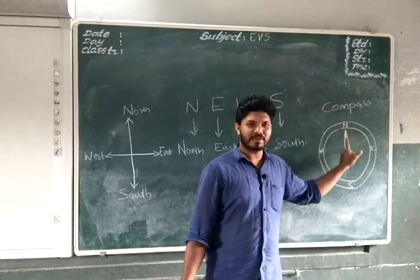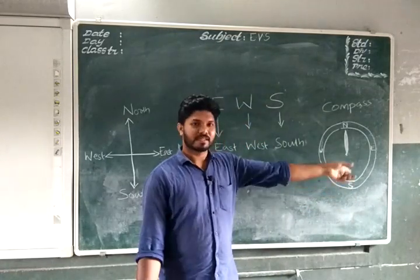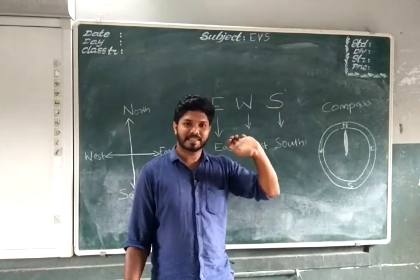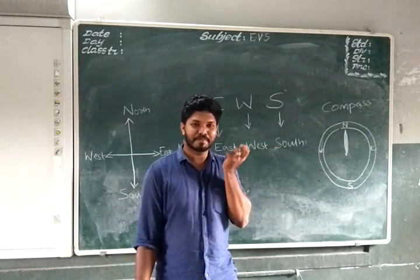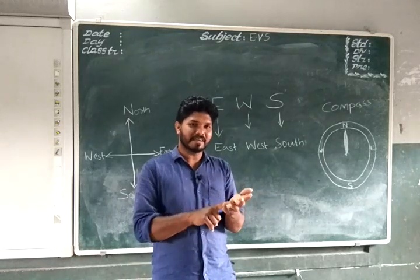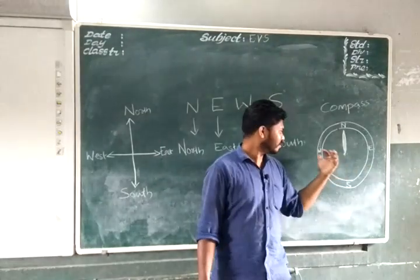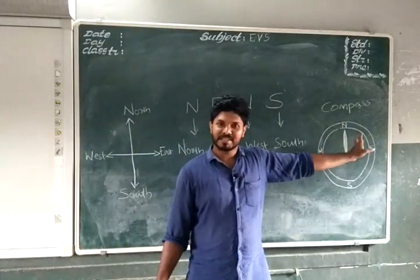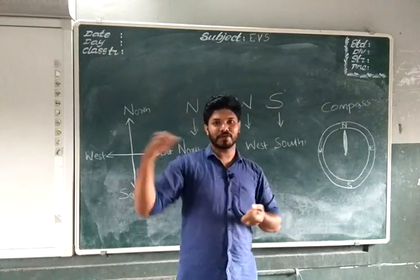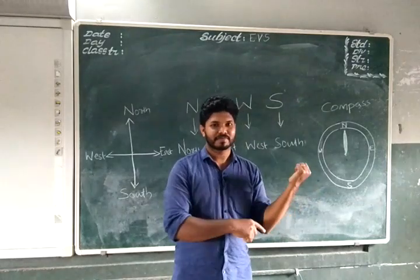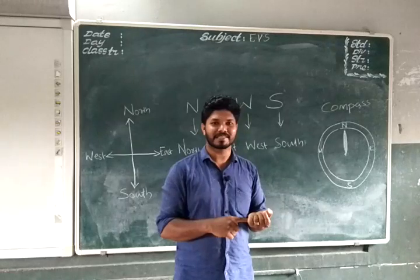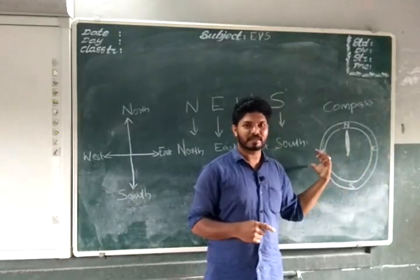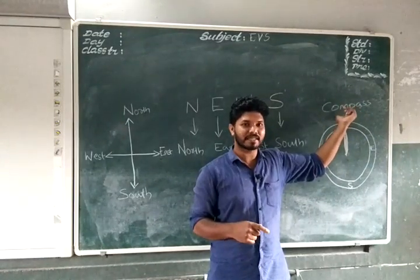The compass has only one needle and it always points to the North direction. Compass is used to know the direction. By looking at it, we can understand East, West, and South also. The right side of North is East, the left side of North is West, and the bottom or opposite side of North is South. So when we get North, we can find all the other three directions. Compass is an instrument which shows us the directions.